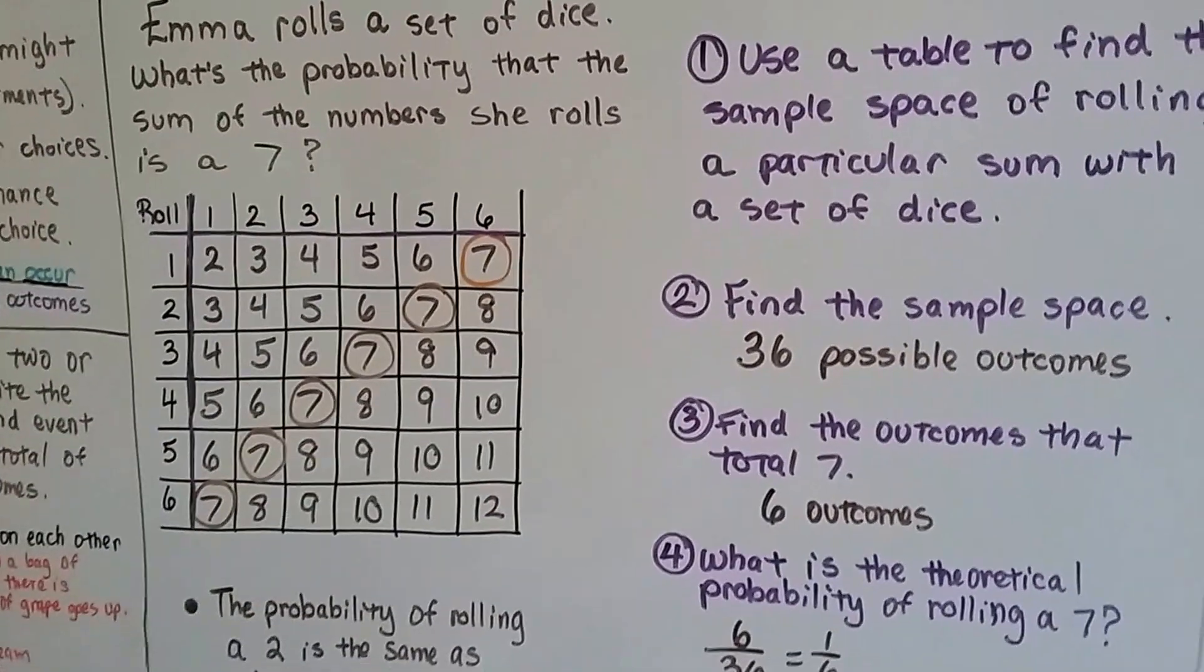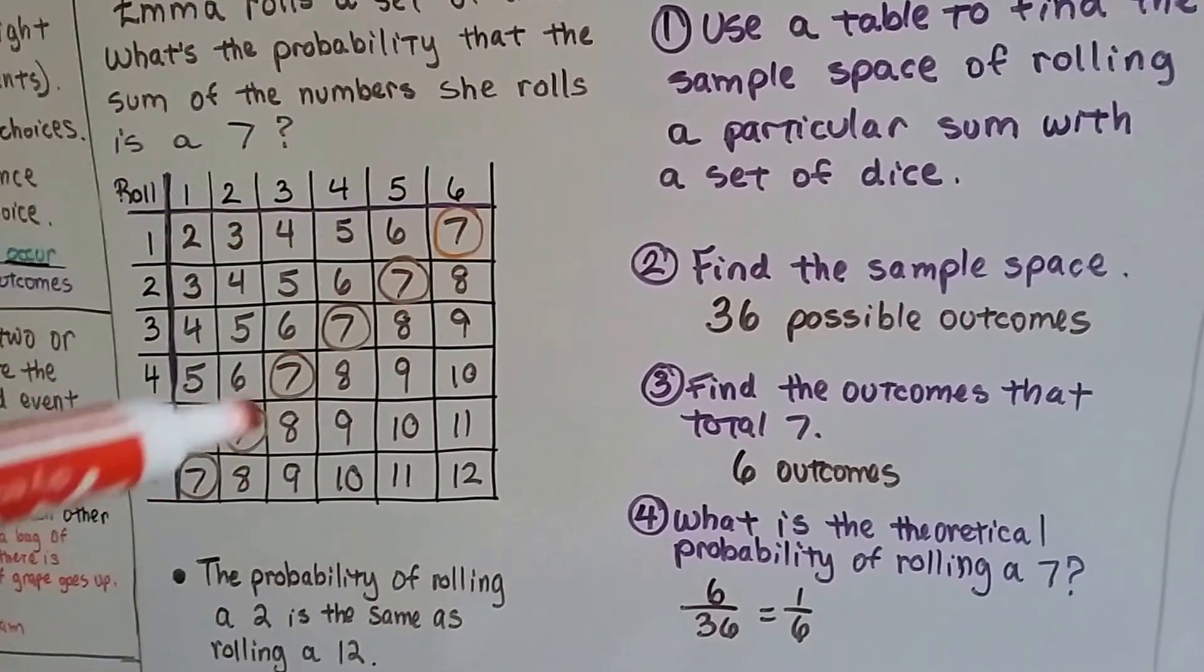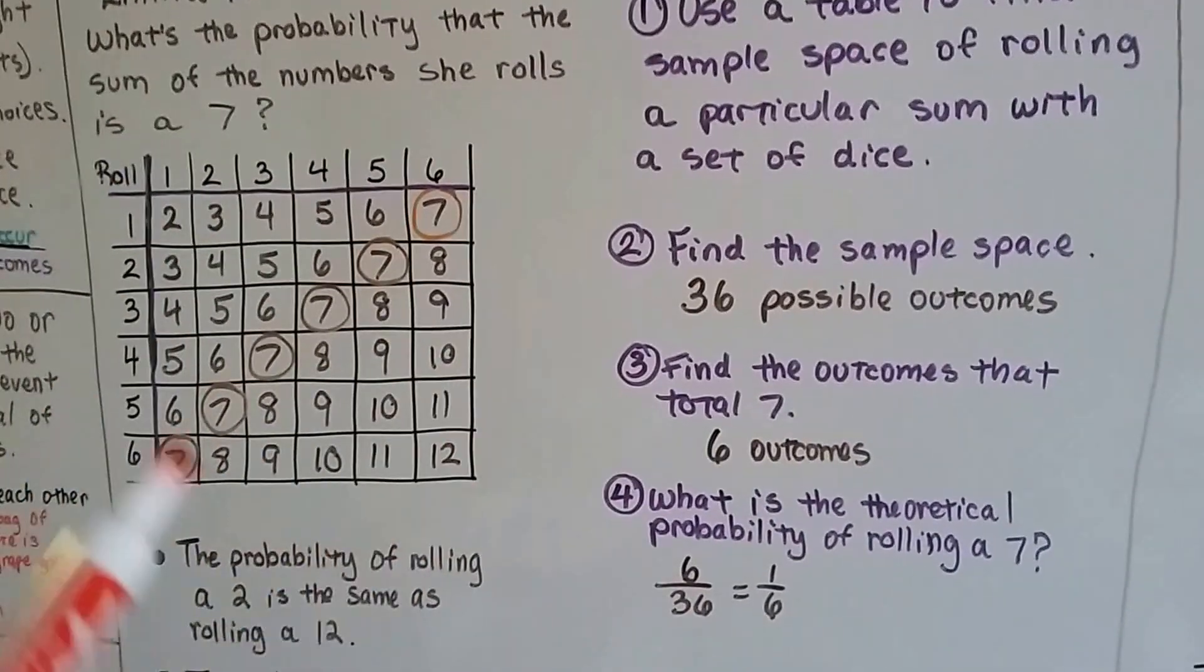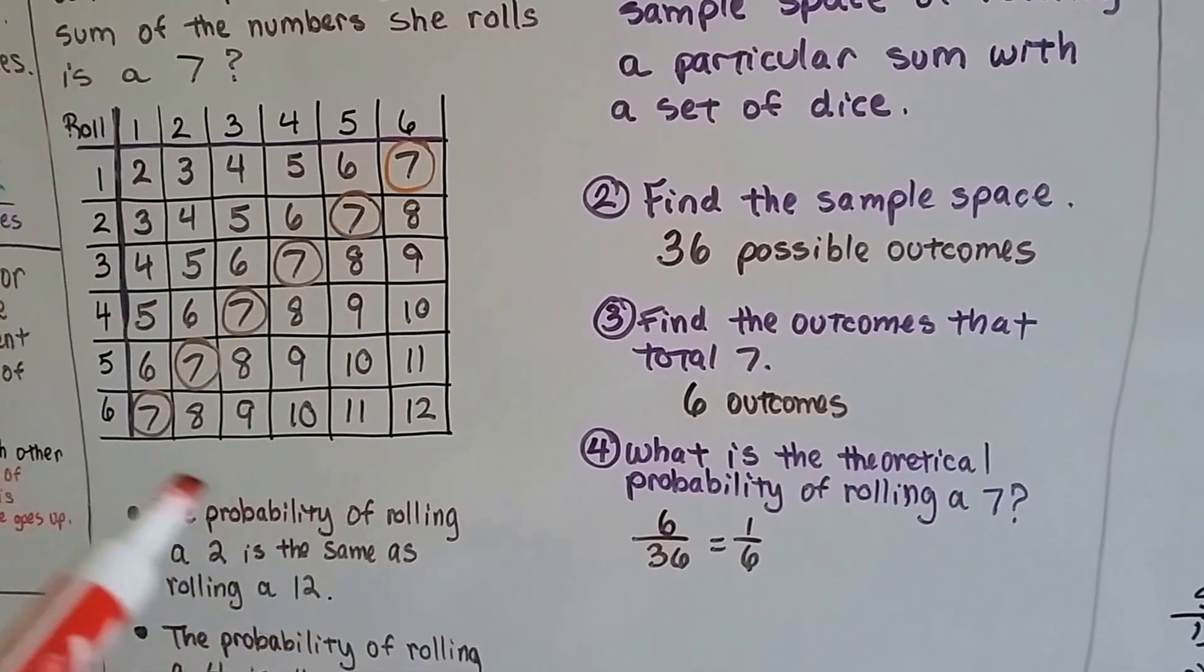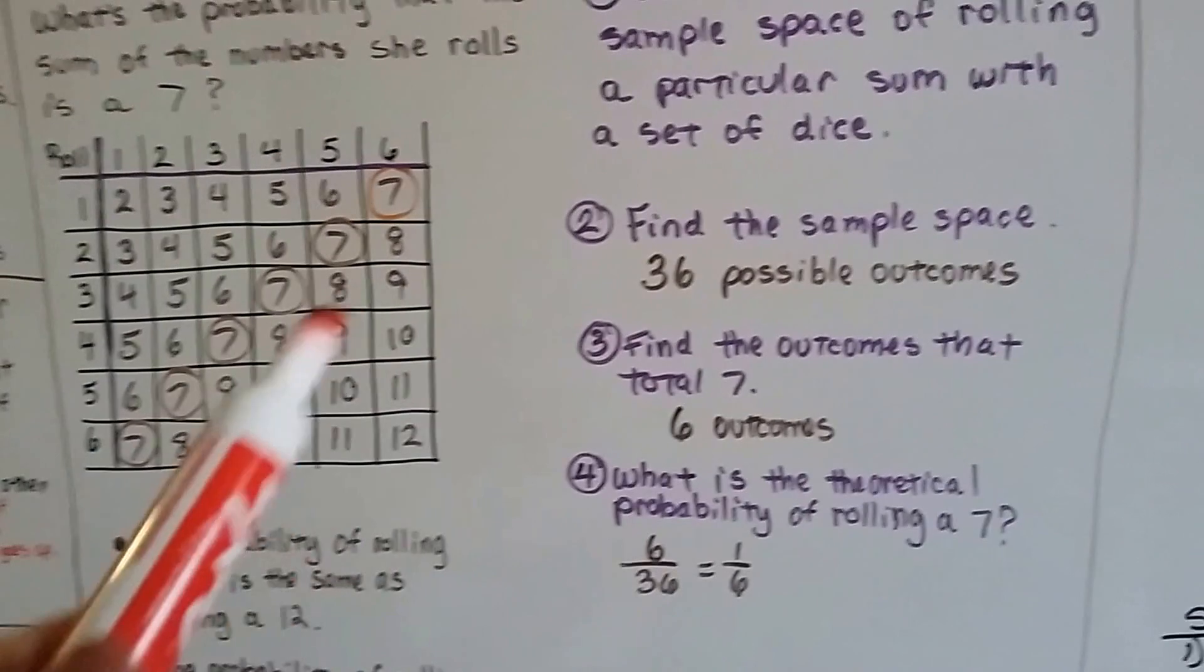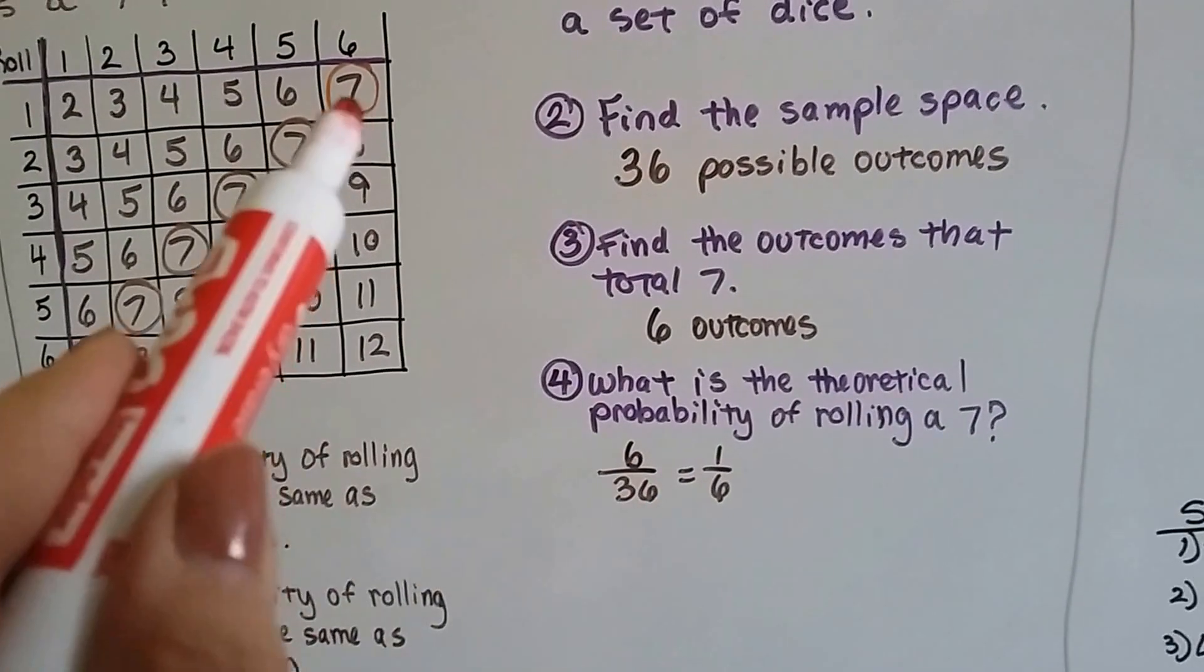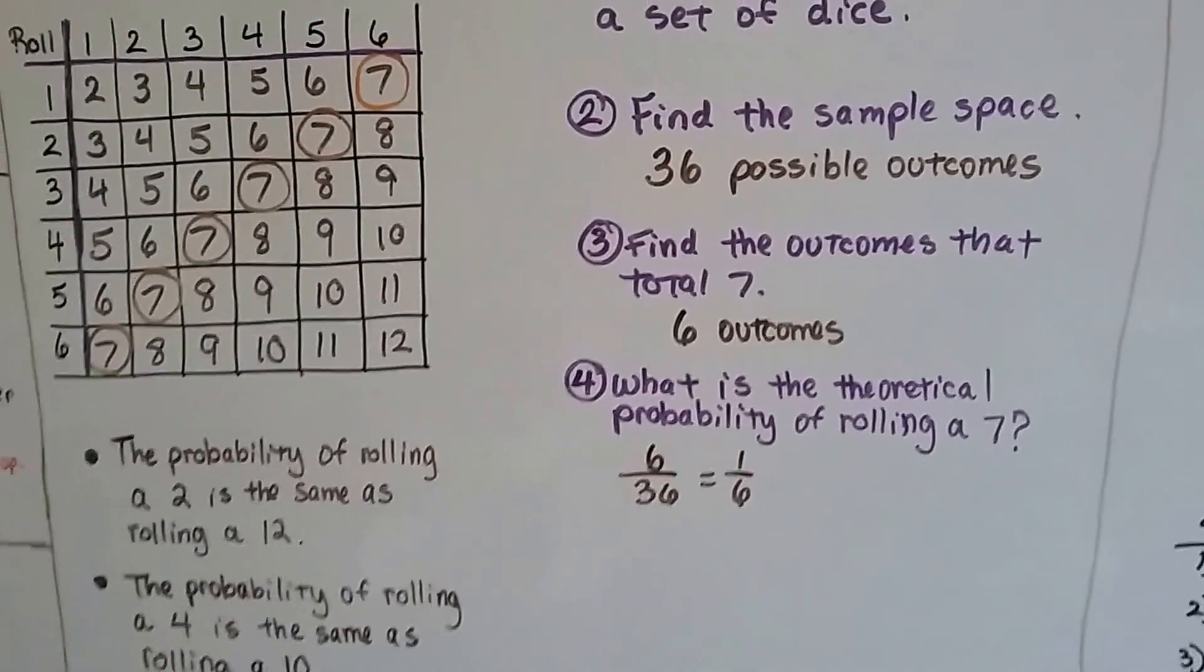We're going to use our table to find the sample space of rolling a particular number with the dice. So we're trying to roll a 7. We can see there's six different ways that she can roll a 7, but there's 36 possible rolls. With all the combinations and ways that the dice could land, there's 36 choices, 6 times 6. To find the outcome that could be 7, which there's 6 chances that it could be a 7, that means 6 out of 36 chances it could be a 7, or a one-sixth chance that she's going to roll a 7.